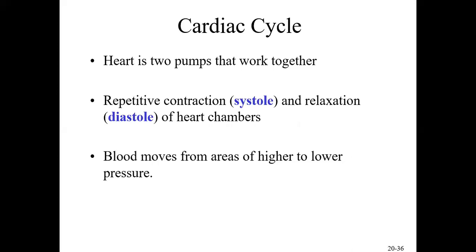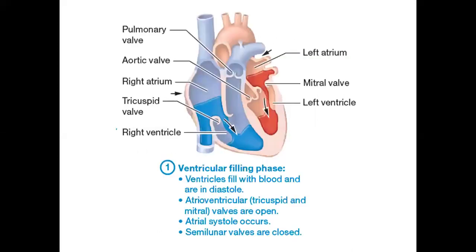The next section covers the cardiac cycle. The heart is two main pumps working together with contraction and relaxation. Contraction is called systole and relaxation is called diastole. Blood, because of blood pressure, always moves from an area of high pressure to an area of low pressure. Understanding these things helps us understand what the cardiac cycle is all about. There are four main phases.